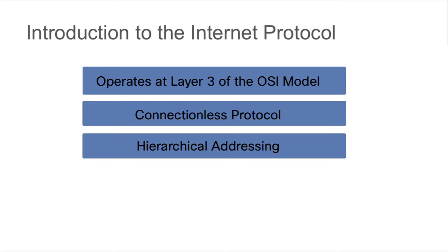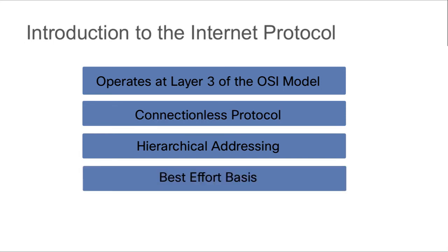The service that IP provides is best effort. It doesn't guarantee that the packet will be delivered — a packet could be dropped, duplicated, or routed in the wrong direction along the way. IP does not provide any reliable service. If we need reliability, we're going to leave that up to our upper layer protocol.